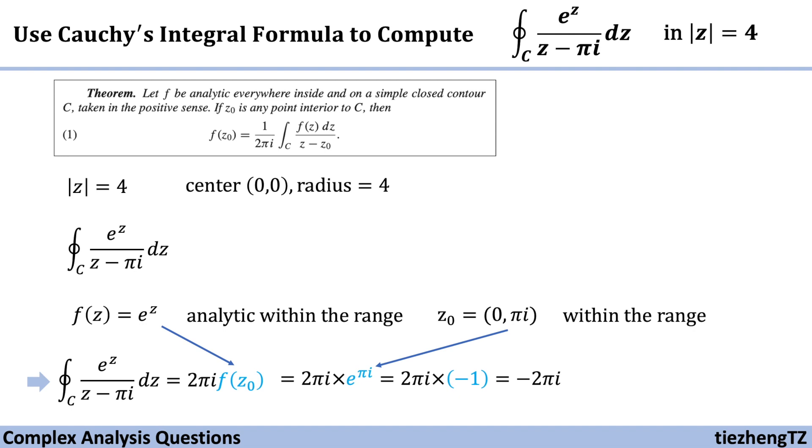Next, we need to find the appropriate point which is interior to this closed contour. Of course, everything is based on the given function. Then we just need to substitute using this formula to get the result.